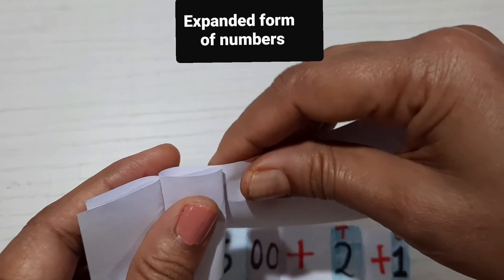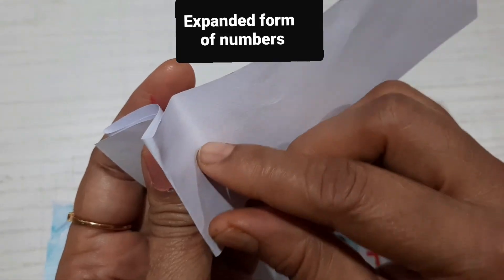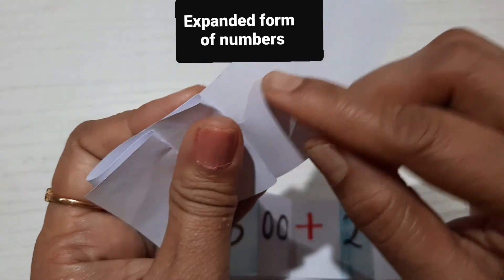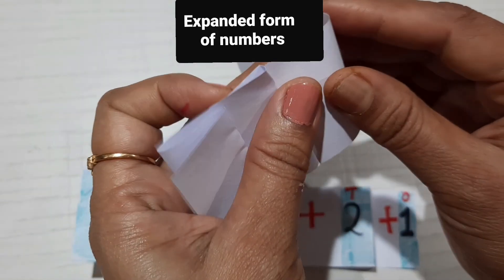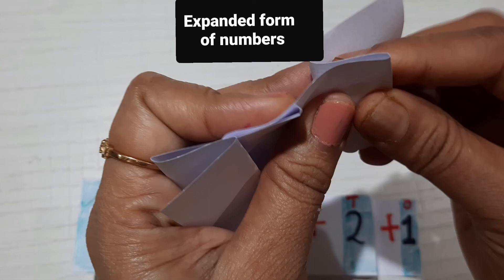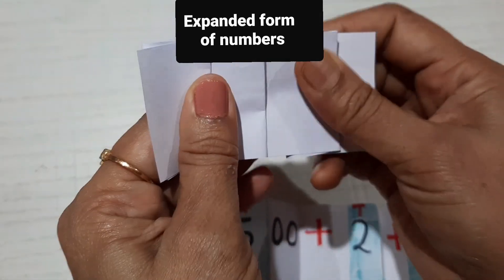Do another fold, write the number of zeros on the back side, then again the plus symbol and another number. Continue like this, then write the numbers over it.